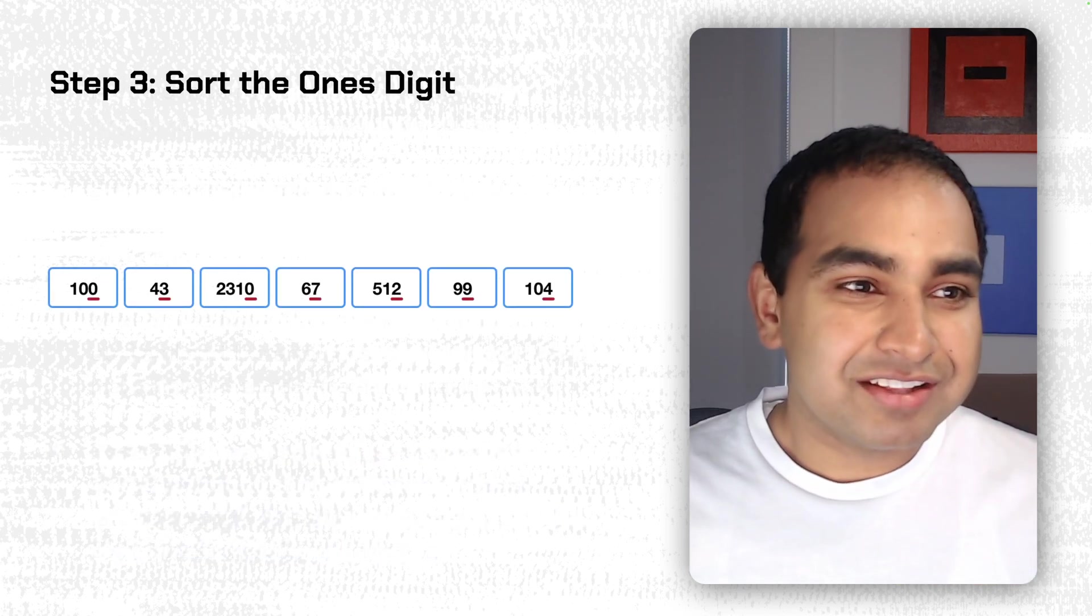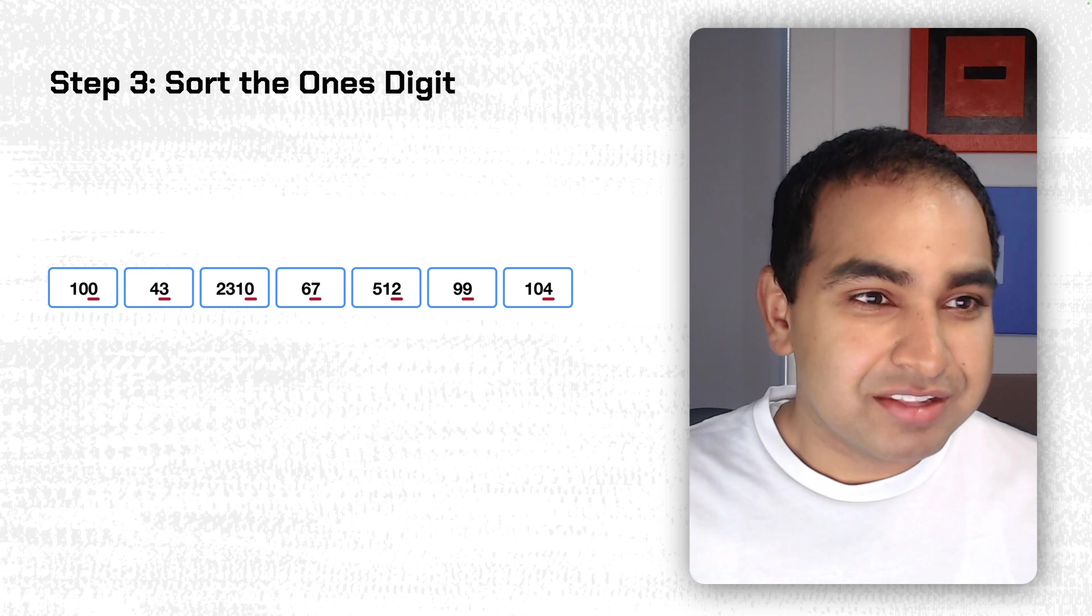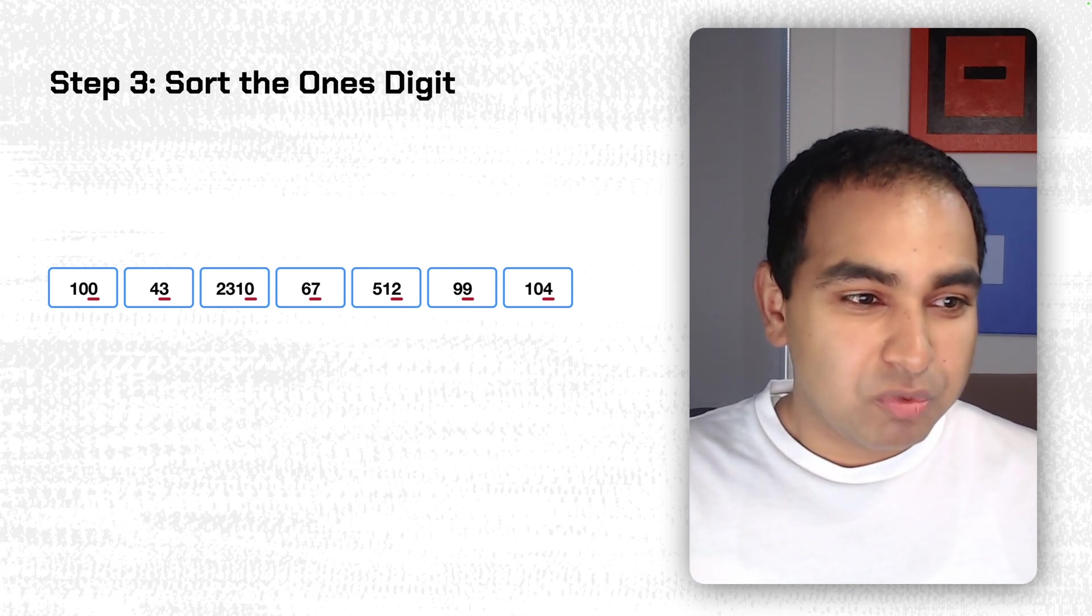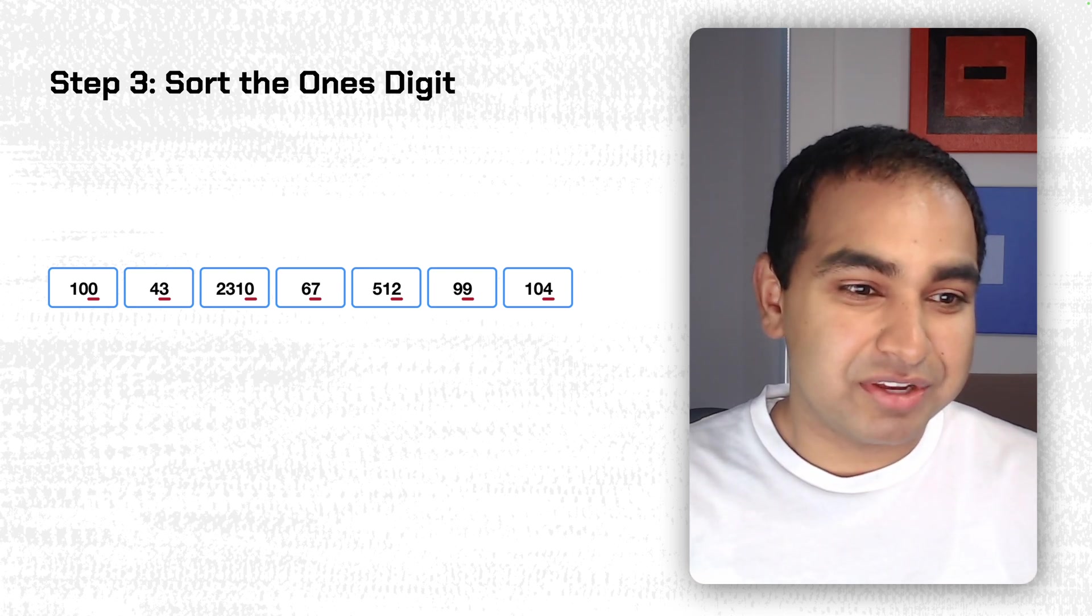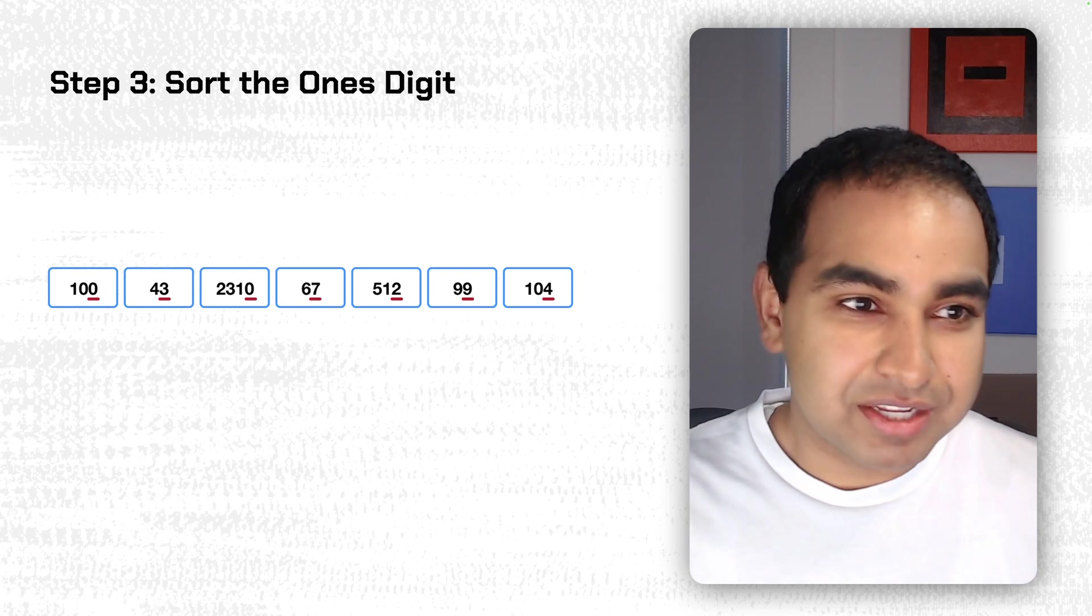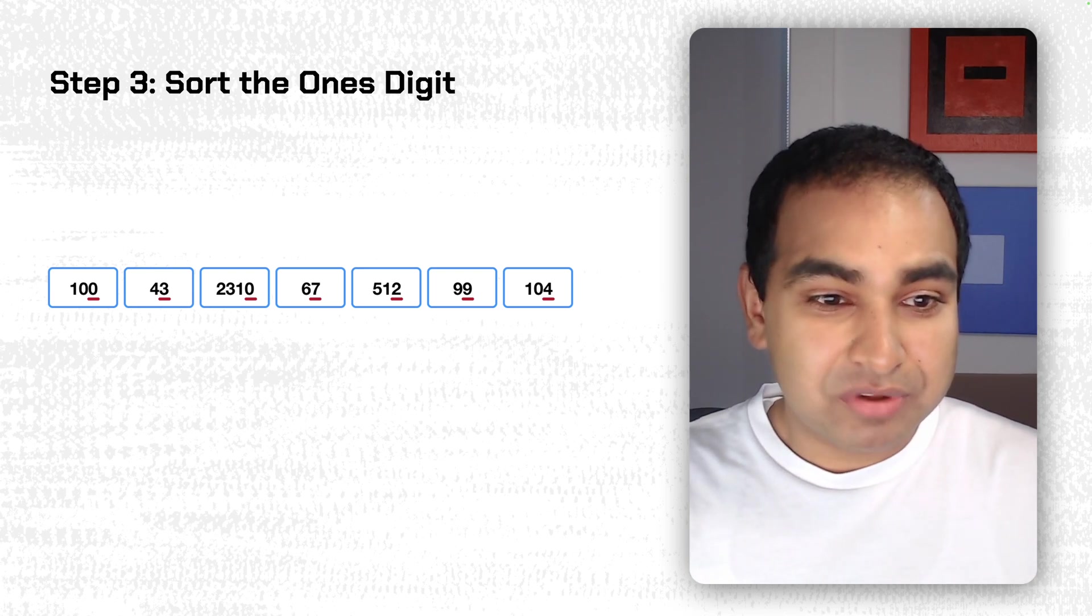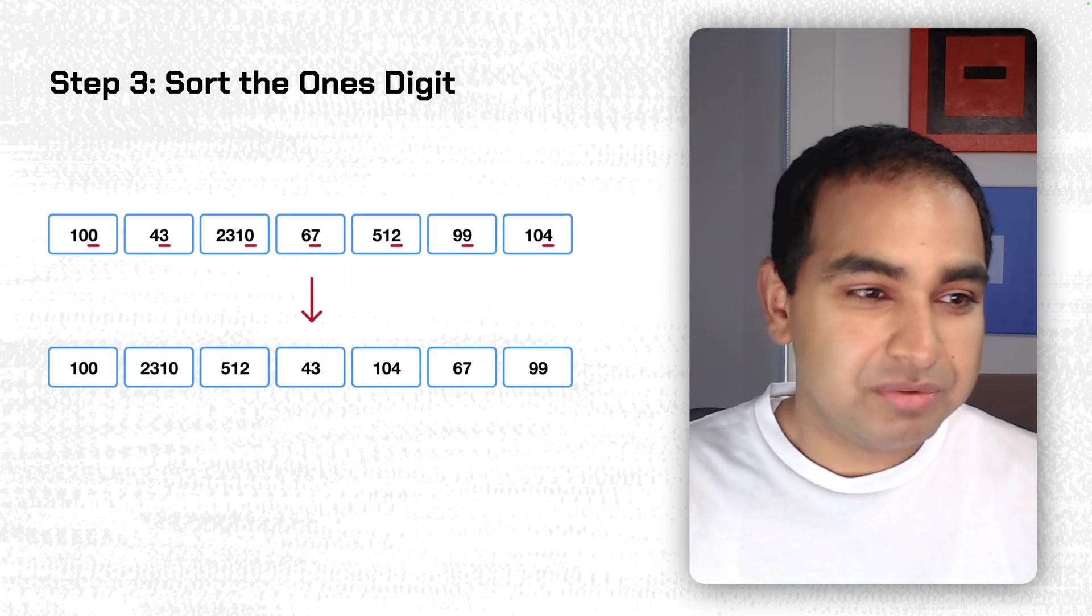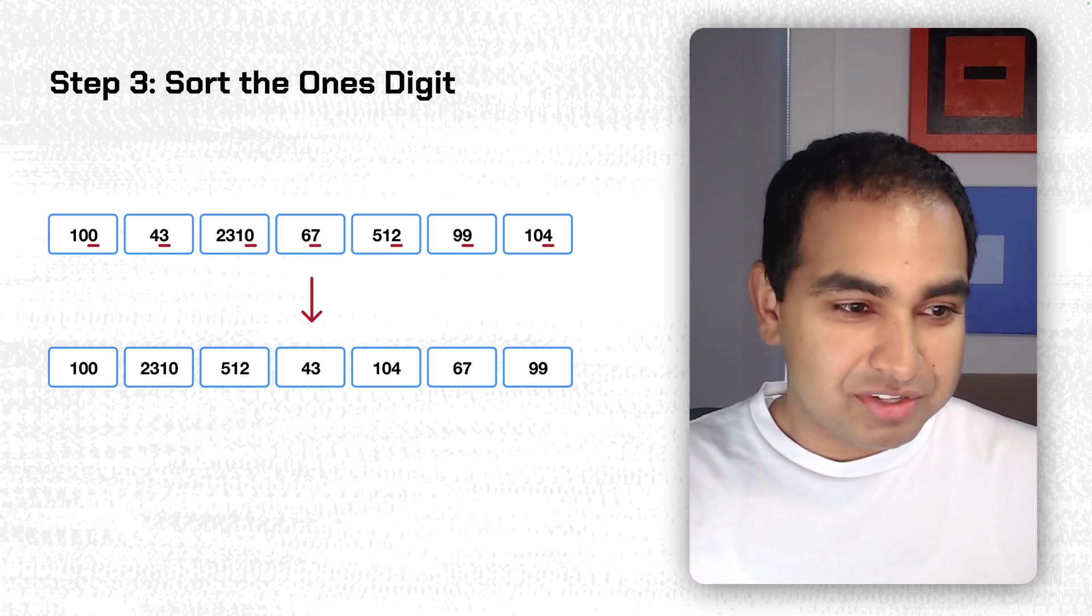So, first, let's start with the steps. Sort the 1s digit. In our current array, the 1s digit would be the rightmost value. So the 0 in 100, the 3 in 43, the 0 in 2310, the 7 in 67, and so on. And so if we sort our array based only on that digit, here's what we're going to see.